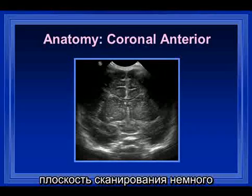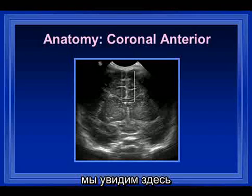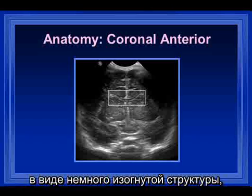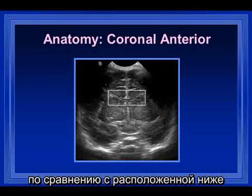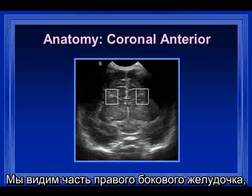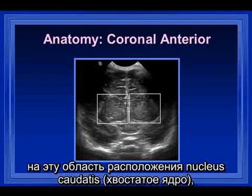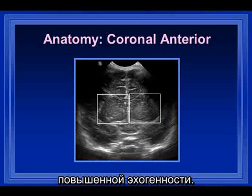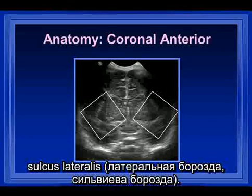Extending the view a little bit more posteriorly but still in the anterior plane, we see the interhemispheric fissure and the cingulate gyrus. The corpus callosum appears as a hammock-shaped, poorly echogenic structure just below the frontal lobe parenchyma. We have portions of the right and left lateral ventricles, and we are beginning to see the caudate nuclei bilaterally as slightly brighter areas of increased echogenicity. We are also beginning to see the Y-shaped structures representing the sylvian fissures.